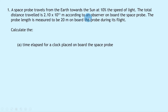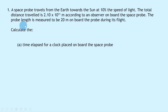Let's get started. Question 1 says: a space probe travels from the Earth towards the Sun at 10% the speed of light. The total distance traveled is 2.10 times 10 to the 11 meters. According to an observer on board the space probe, the probe length is measured to be 20 meters on board the probe during its flight.